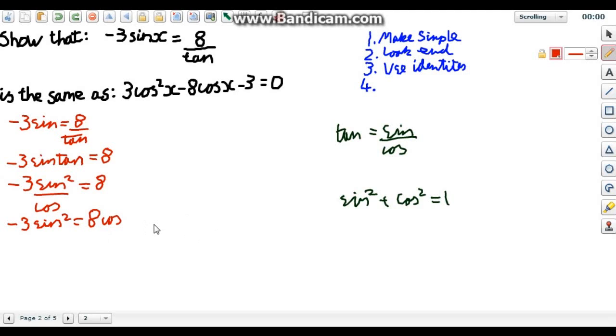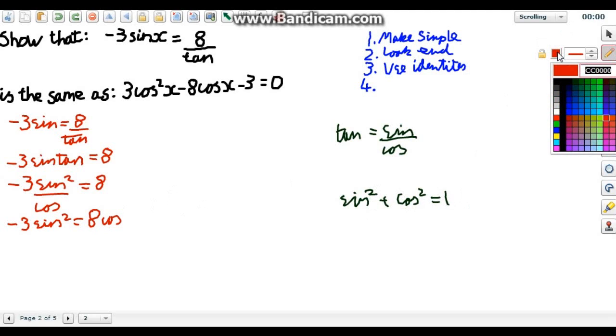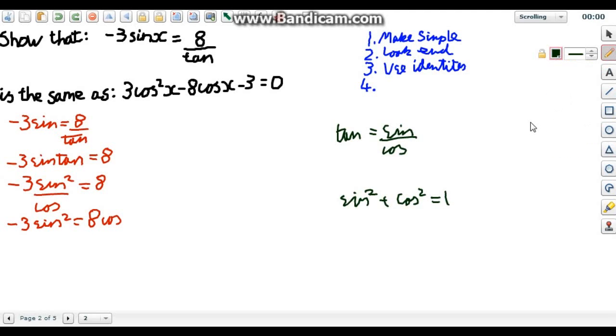So now it's simple. If we look at the end we only want cos but we now have sine and cos. So we're going to use our second identity. Sine squared plus cos squared is equal to 1 because this is the identity that you use to swap between sine and cos. We've got sine squared that we don't want. So we're going to rearrange this to get sine squared equals 1 minus cos squared.